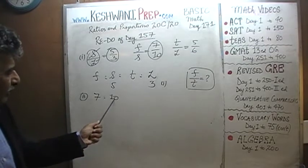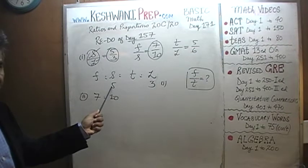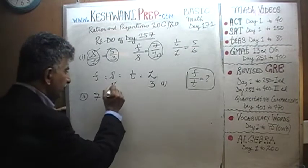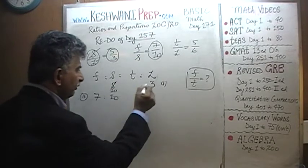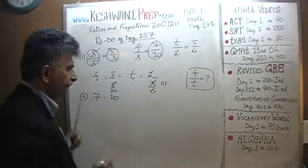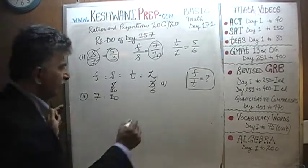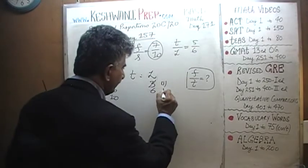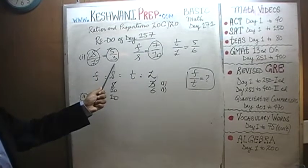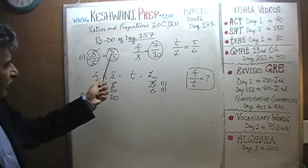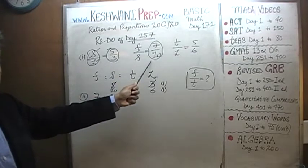We have to convert this 5 into a 10. Multiply 5 by 2 and it becomes 10. And if you multiply that by 2, we have to go back and change this to 6. So that 10 to 6 is still ratio number 1. Ratio of 10 to 6 is the same as 5 to 3. And this is 7 to 10, which is right from here.